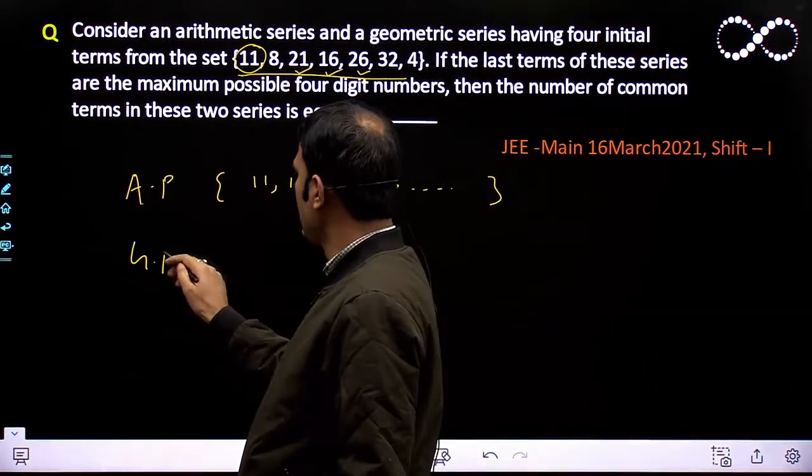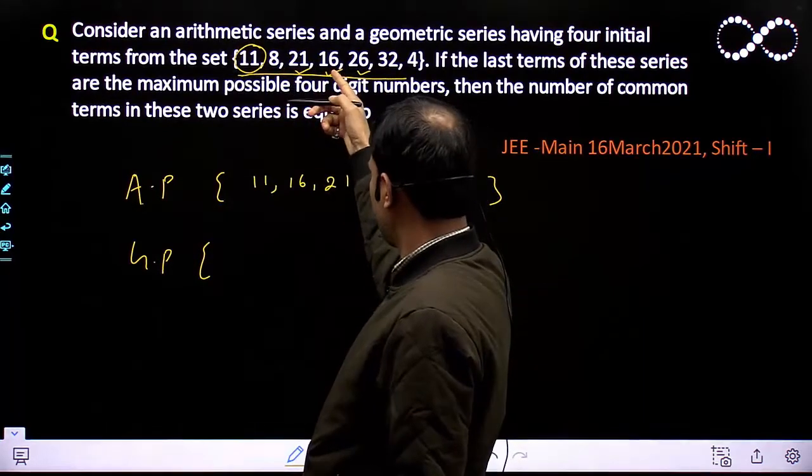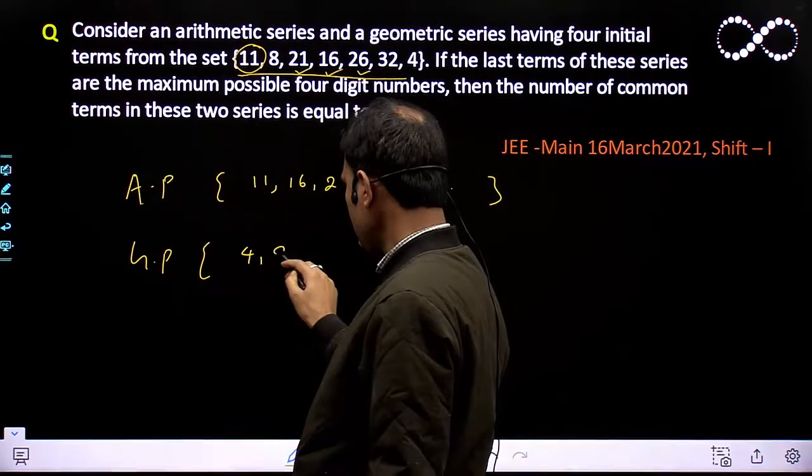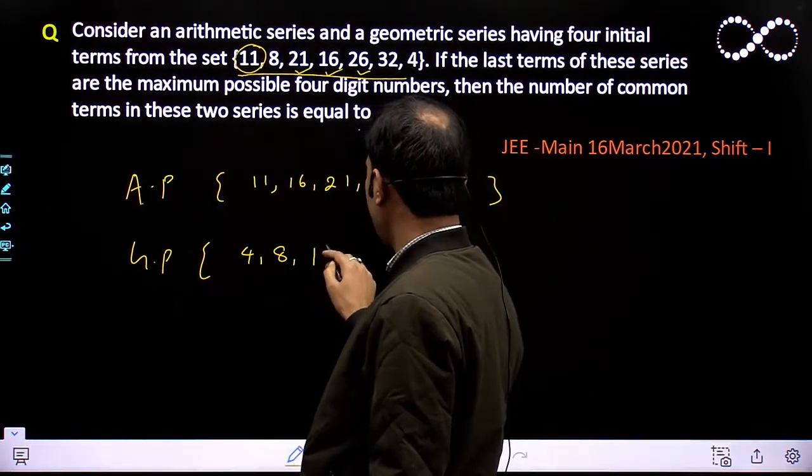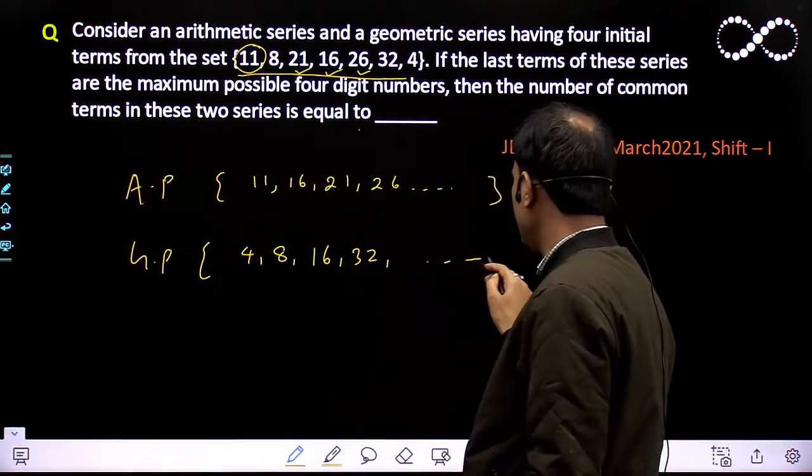And the GP series... In GP series you can see 4, 8, 16, it's going as multiples of 2, so 32. So 4, 8, 16, 32, after this comes 64, 128, and so on.